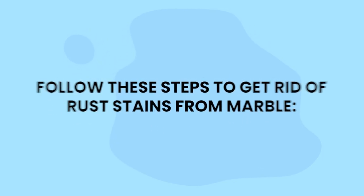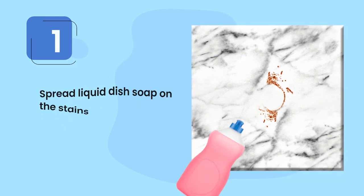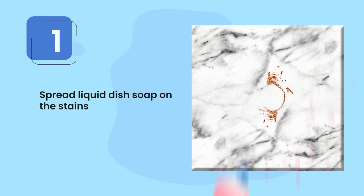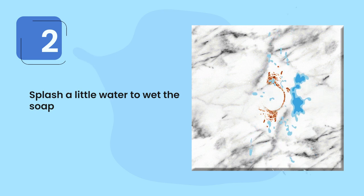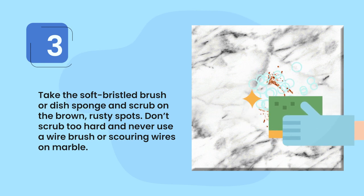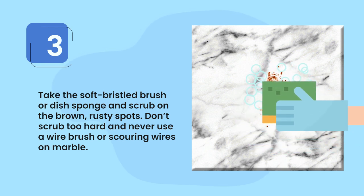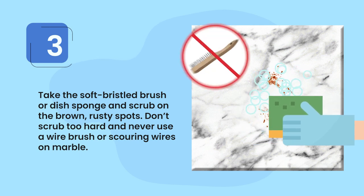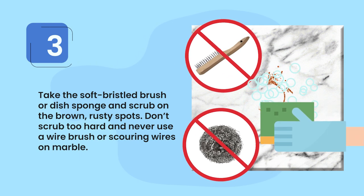Step one: spread liquid dish soap on the stains. Step two: splash a little water to wet the soap. Step three: take the soft bristled brush or dish sponge and scrub on the brown rusty spots. Don't scrub too hard and never use a wire brush or scouring wires on marble.